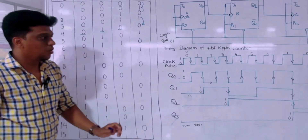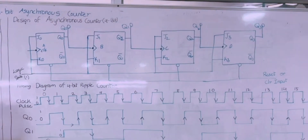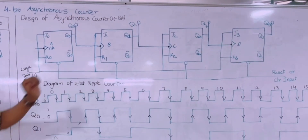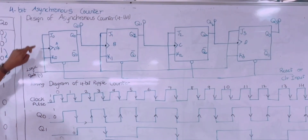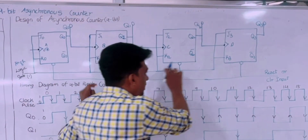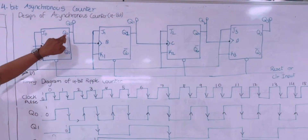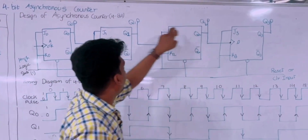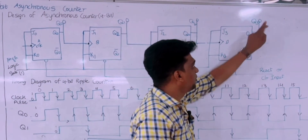This is the design of the 4-bit asynchronous counter with four flip-flops. The inputs are J0 K0, J1 K1, J2 K2, and J3 K3, with outputs Q0, Q1, Q2, and Q3. For all JK inputs a high logic state of 1 is provided, and a reset or clear input is given to all flip-flops. The output of each flip-flop is driven as the clock to the next flip-flop — Q1 clocks the third flip-flop, Q2 clocks the fourth, and the final output is Q3.